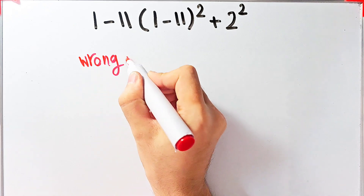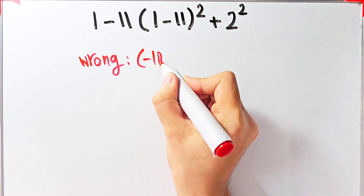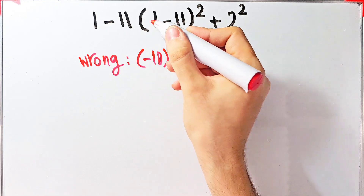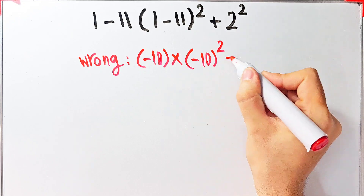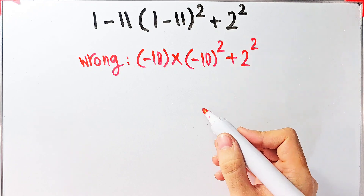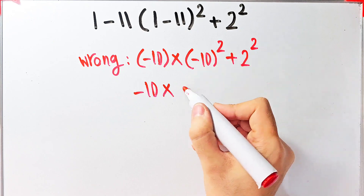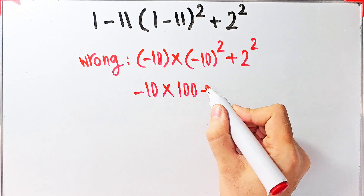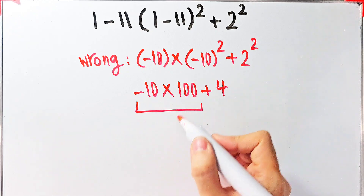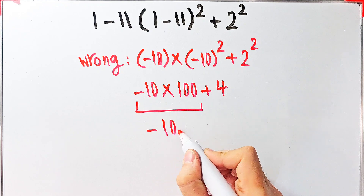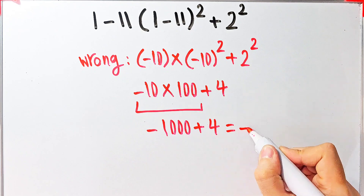For example, some people solve this question like this: 1 minus 11 equals negative 10, then negative 10 times 1 minus 11, which equals negative 10, then to the power of 2, plus 2 to the power of 2. Negative 10 times negative 10 to the power of 2 equals 100, plus 2 to the power of 2, which equals 4. Negative 10 times 100 equals negative 1000, and negative 1000 plus 4 equals negative 996.